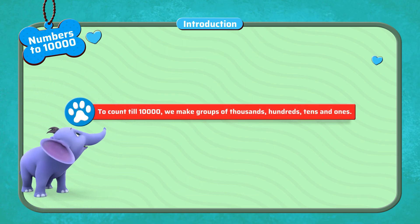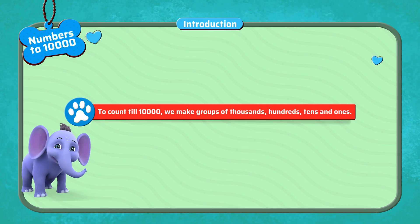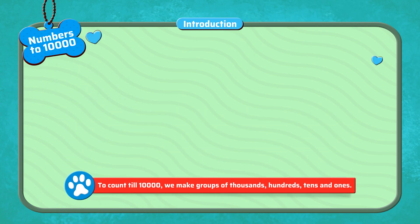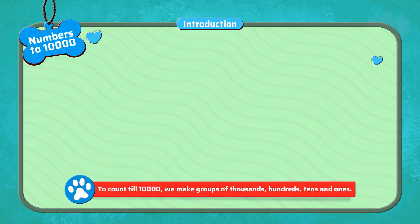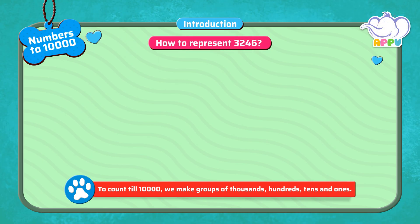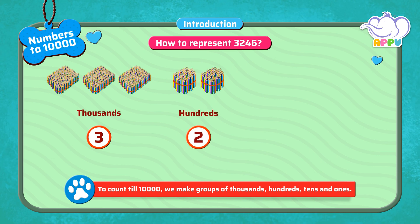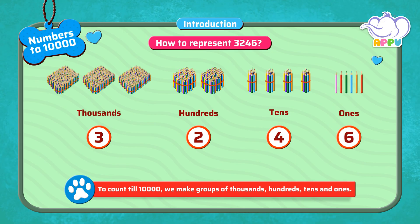To count till 10,000, we make groups of thousands, hundreds, tens, and ones. Let's see an example. How to represent 3,246. For this, we have three groups of 1,000 pencils, two groups of hundreds, four groups of tens, and six pencils.